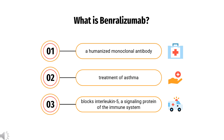Benrolizumab, sold under the brand name Fasenra, is a monoclonal antibody directed against the alpha chain of the interleukin-5 receptor. It was developed by MedImmune for the treatment of asthma. Two phase 3 clinical trials of benrolizumab reported meeting their primary endpoints in 2016.